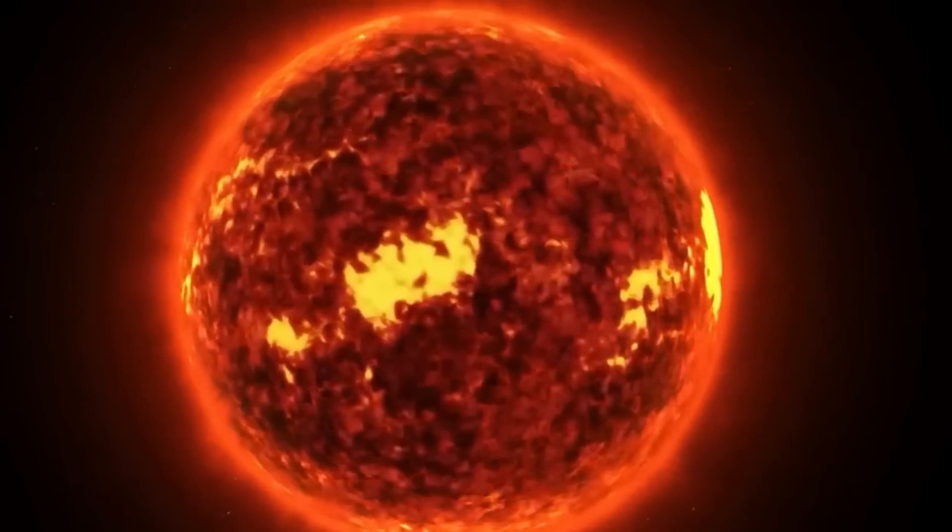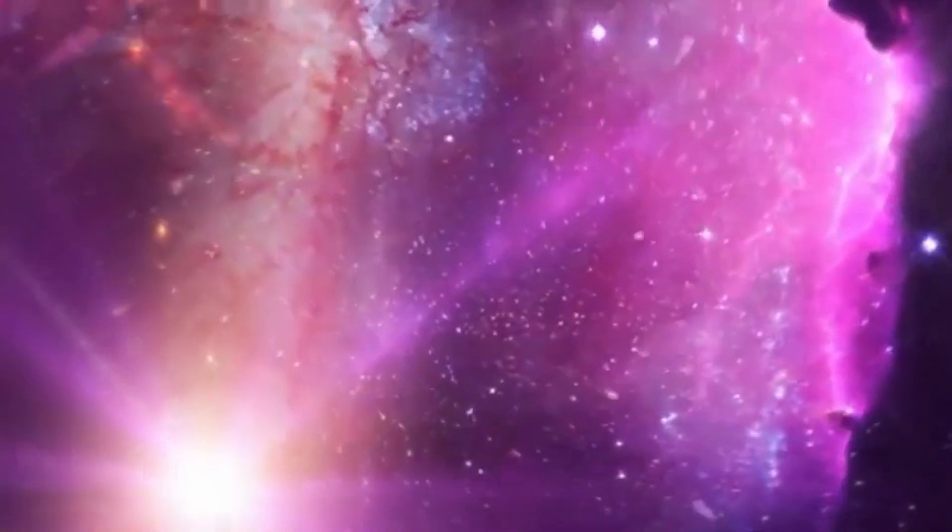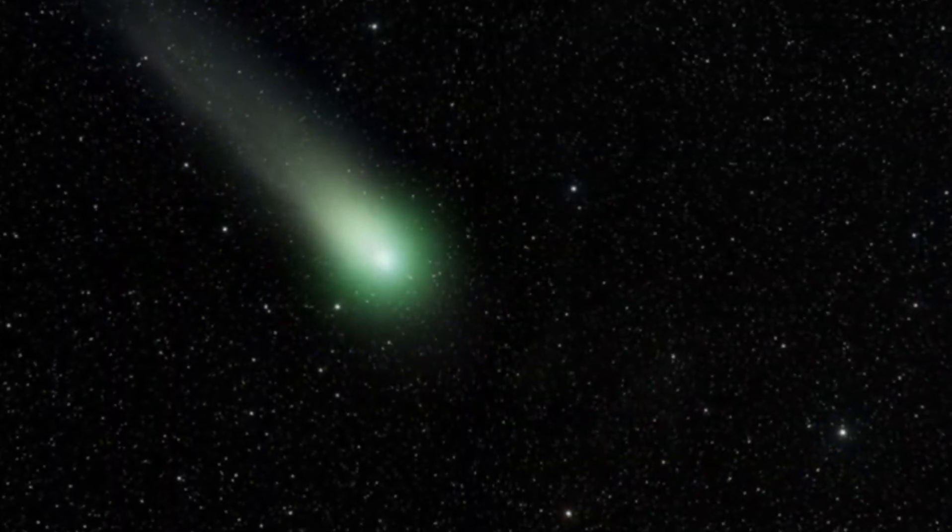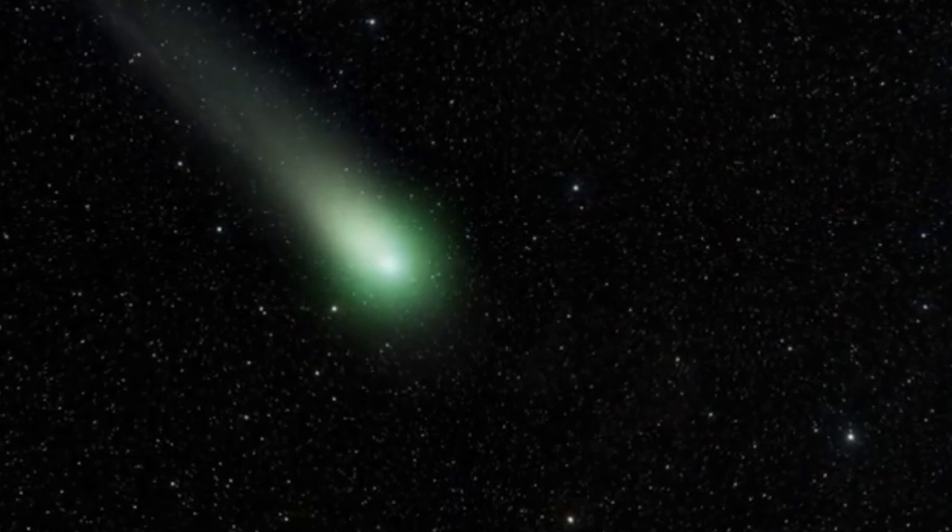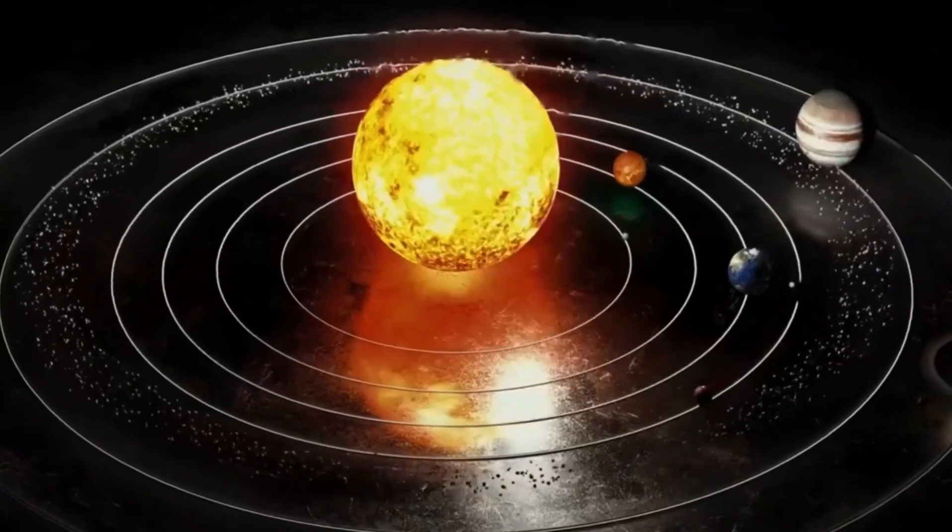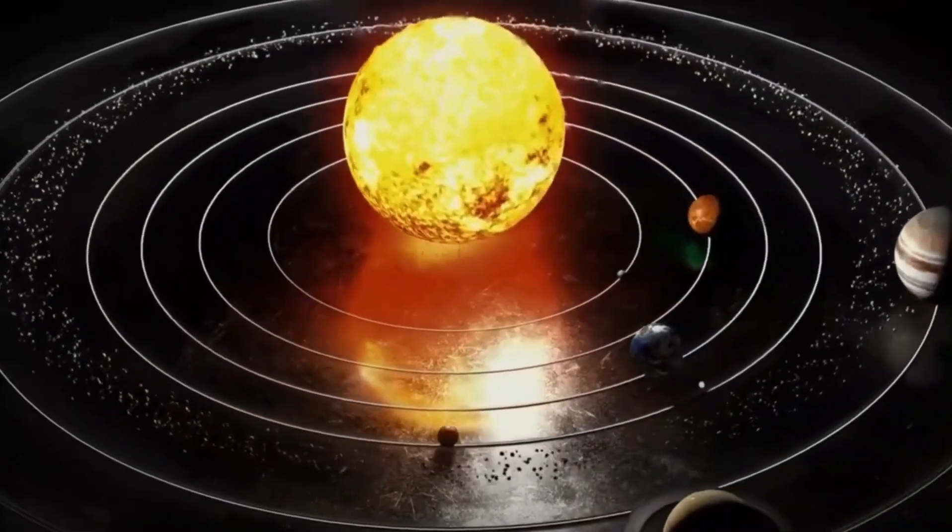Second, red supergiants are known for shedding massive amounts of material in their later stages. This process is crucial in shaping their evolution and eventual supernova explosions. Yet how they lose this mass, at what rate, and what triggers these outbursts remains unclear. Betelgeuse, with its recent fluctuations, only adds to this prevailing uncertainty.